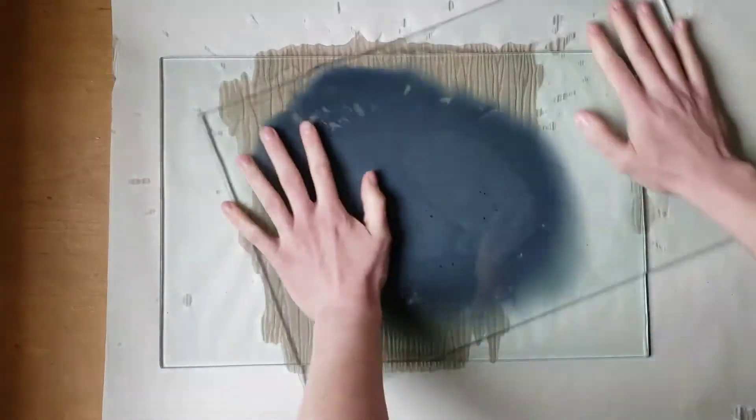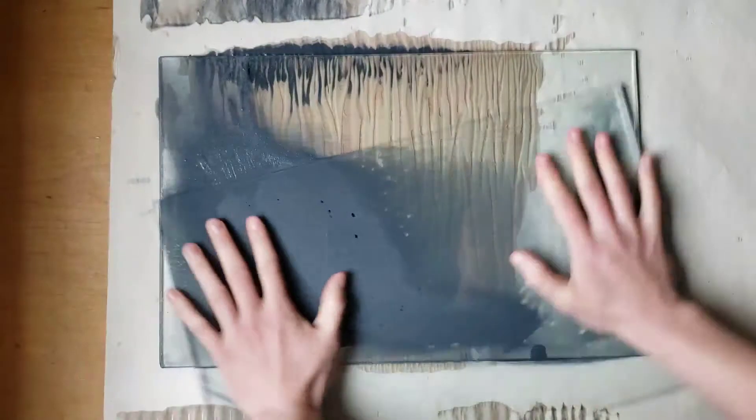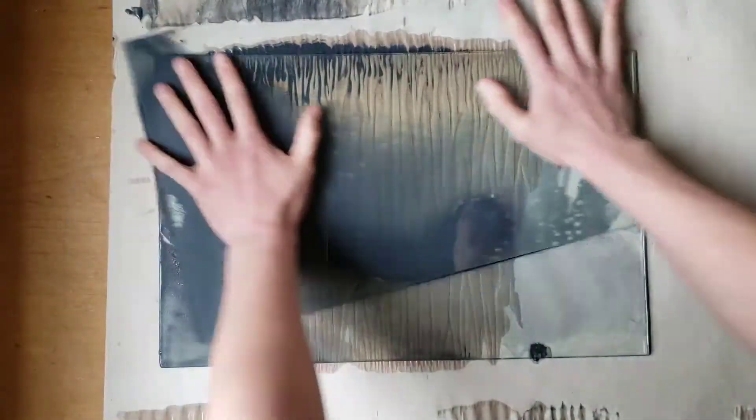Using pressure, make figure eights with the top sheet of glass, being sure to get the edges on both plates. Keep in mind this video is sped up to one and a half times the actual speed.